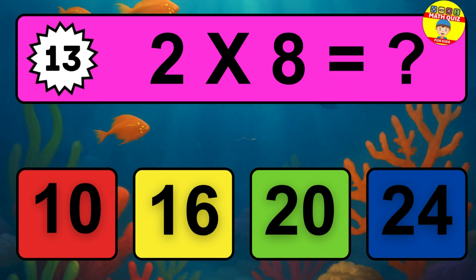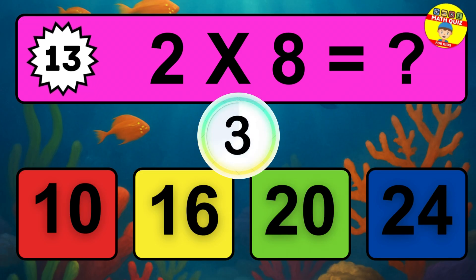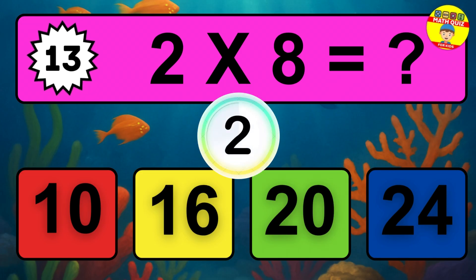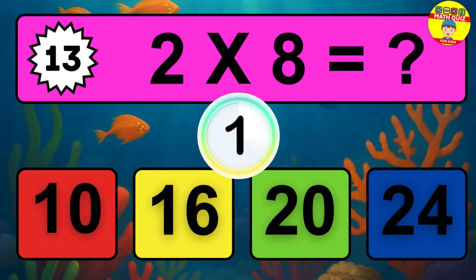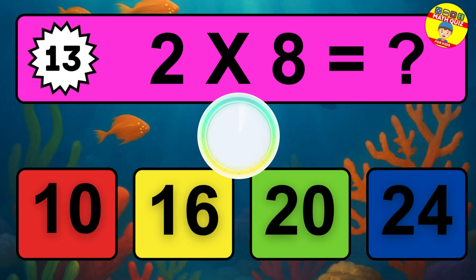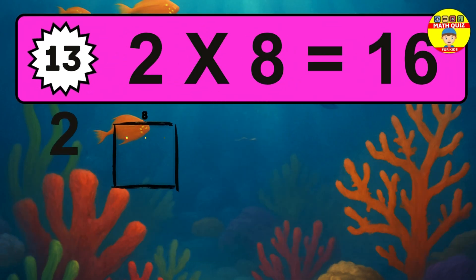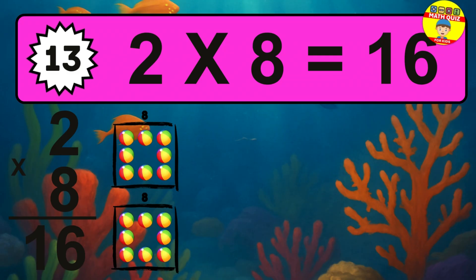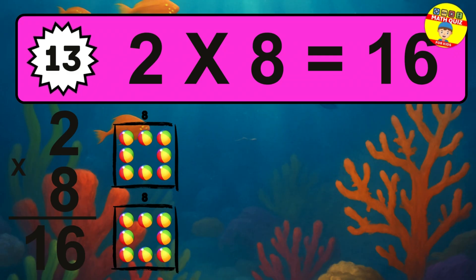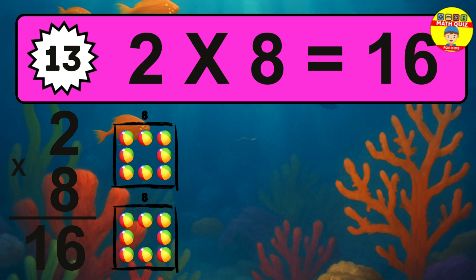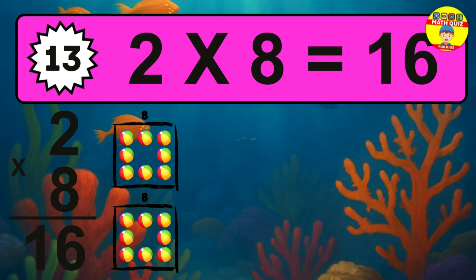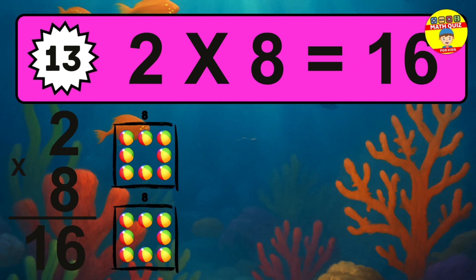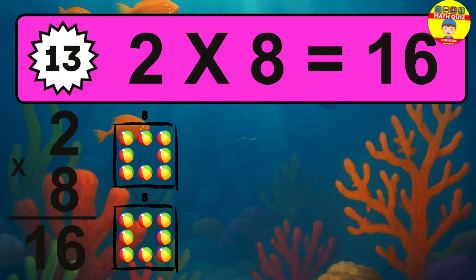Question 13. 2 times 8 equals what? To calculate, we have 2 groups with 8 balls each one. So, how many balls do we have? 16 balls.